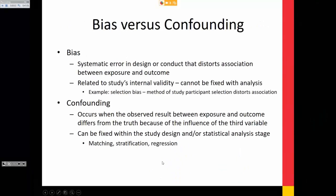Bias and confounding: bias is a systematic error that distorts association — it relates to the study's internal validity and can't be fixed with analysis. Confounding occurs when the observed result between exposure and outcome differs from the truth because of the influence of a third variable. Confounding can be fixed through study design or analysis — by matching on the confounding variable, stratifying by it, or performing regression analysis to account for it.